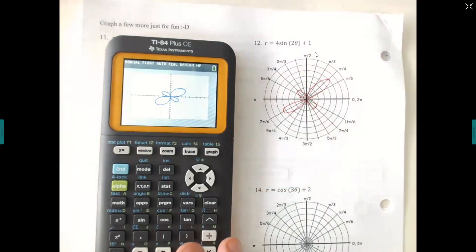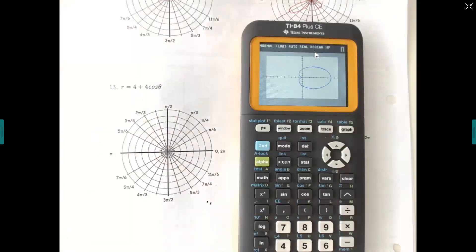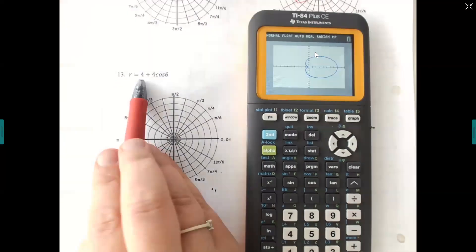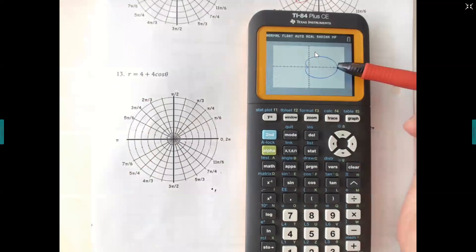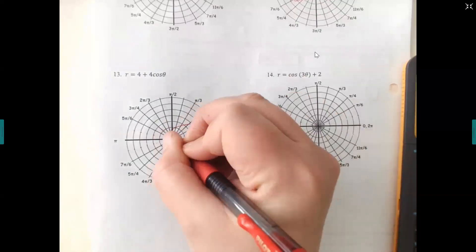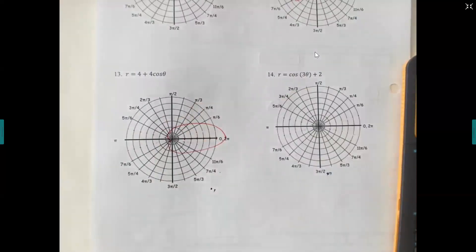Then 13, go ahead and graph it. 4 plus 4 cosine. I usually call it a lily pad, but you can call it a heart if you want. Notice that it's not a circle because it kind of dimples at the origin. So what is four plus four? Eight. Which means that's how long the lily pad is. So we're going to count out 1, 2, 3, 4, 5, 6, 7, 8. And then dimple and dimple.